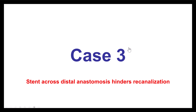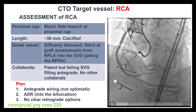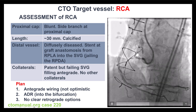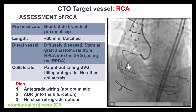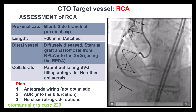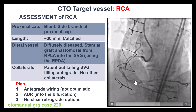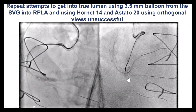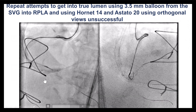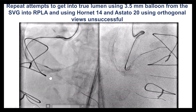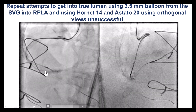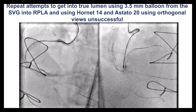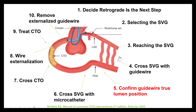This is case number three, showing the difficulty that can be encountered when there is a stent across the distal SVG anastomosis. This is a patient with an occluded native right coronary artery and a saphenous vein graft that has had recurrent failure. The retrograde approach was very challenging because there was a previously placed stent from the vein graft into the native coronary artery that made wiring quite challenging.